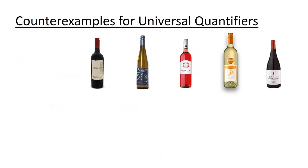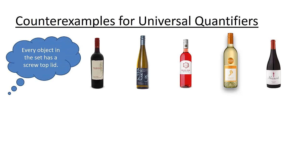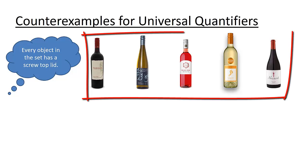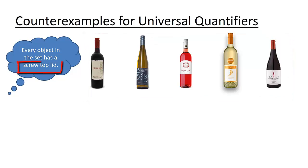Next, suppose that we have a statement that contains a universal quantifier. I suspect the statement 'every object in this set has a screw top lid' to be false. What would I need to show in order to prove that the statement is false? Here, the entire group of five wines makes the set in question, and screw top lid is the property that we're interested in.